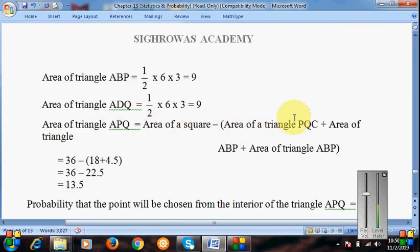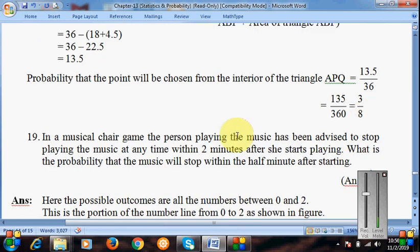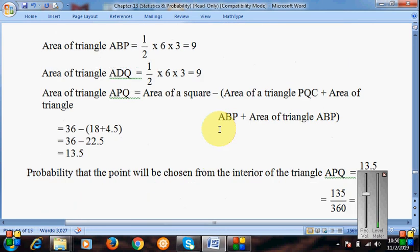We will subtract the area of square from these three triangles. Now you all look here: area of square minus area of these three triangles, and we got 13.5. And in this way, the probability is 13.5 upon 36.